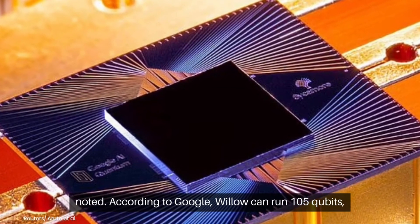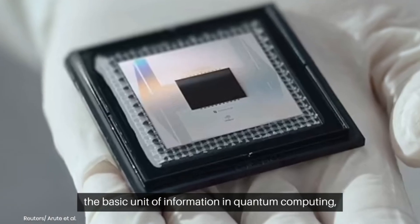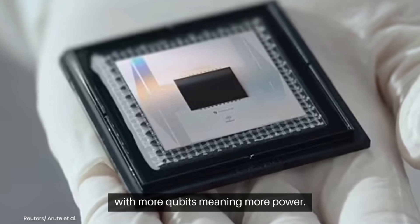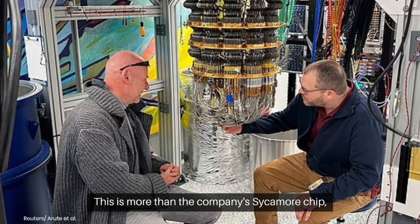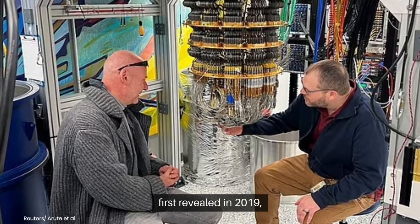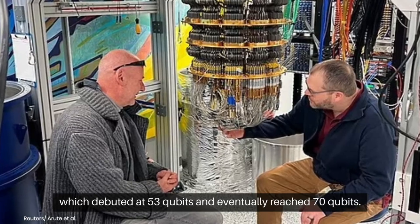According to Google, Willow can run 105 qubits, the basic unit of information in quantum computing, with more qubits meaning more power. This is more than the company's Sycamore chip, first revealed in 2019, which debuted at 53 qubits and eventually reached 70 qubits.